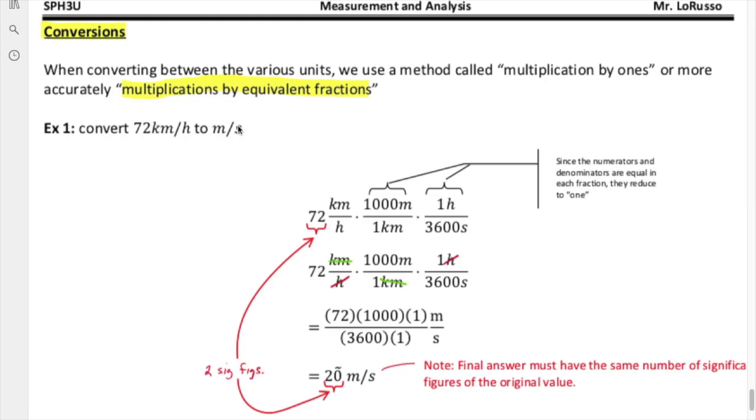The best way to explain the procedure is just to do an example. Let's convert 72 kilometers per hour to meters per second. This implies that we need to convert the kilometer bits into meters and the hour bits into seconds.